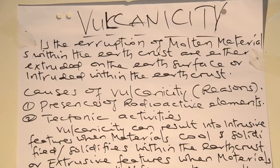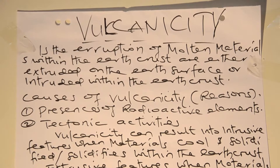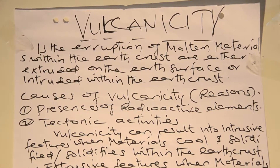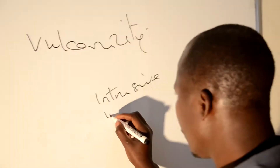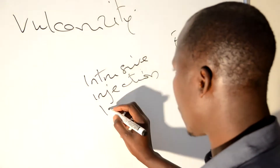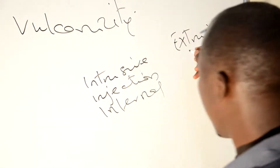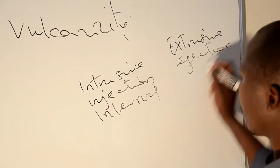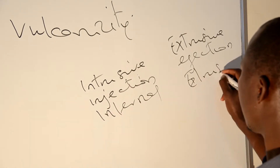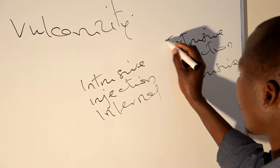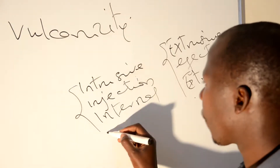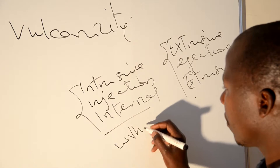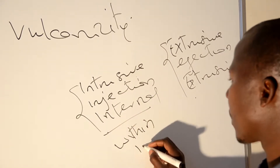There is certain terminology here you have to understand. Intrusive — also called intrusive, injection, or internal — refers to the situation of material remaining within the crust, inside the earth's crust.